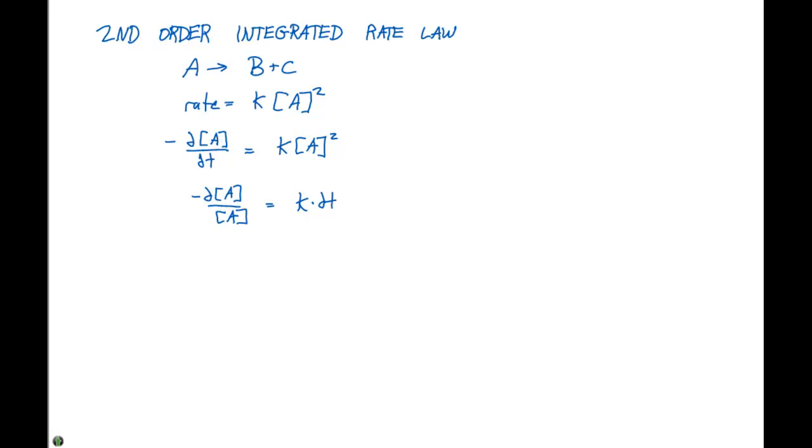If we again go through and make this positive and this negative and then integrate from A sub 0 to A at any time T for both sides, we're going to get the following. Since this term down here in the denominator is squared, our integral is going to change to 1 over A at any time T minus 1 over our initial concentration and this is going to equal KT.